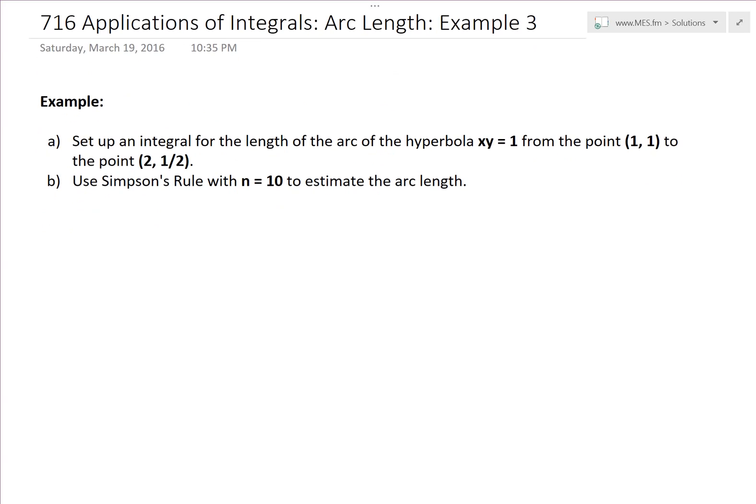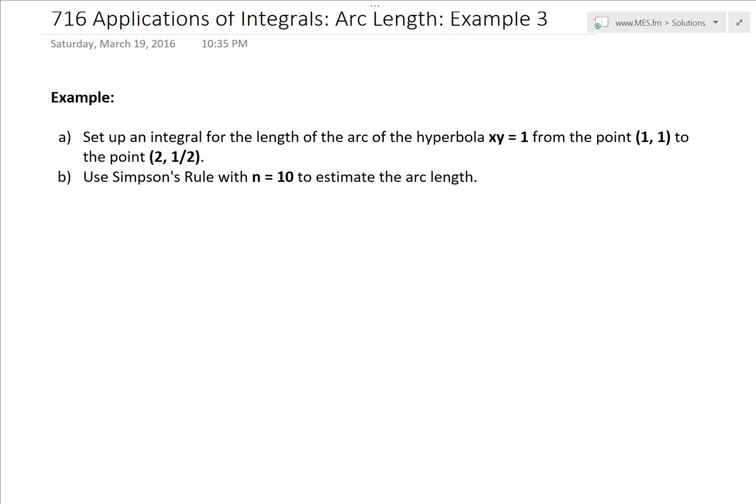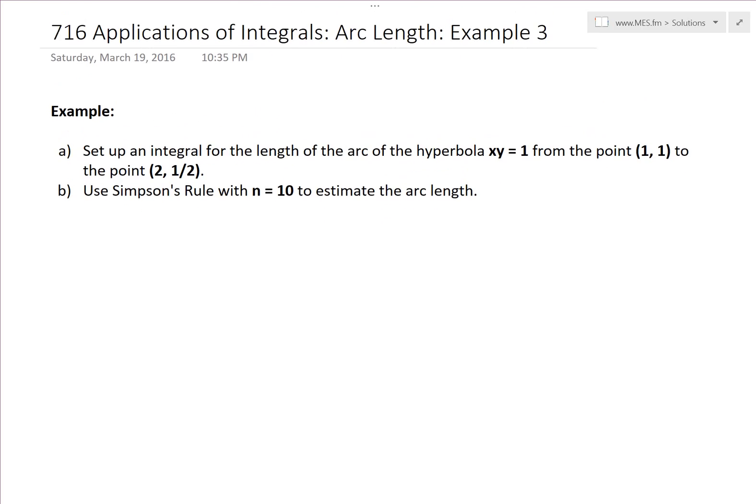Basically, I didn't cover this example, which said set up an integral for the length of the arc of the hyperbola xy equals 1 from the point (1,1) to the point (2, 1/2). And part B says use Simpson's rule with n equals 10 to estimate the arc length. And the reason we're going to use Simpson's rule is because the integral we're going to get is pretty complicated and may not even have an explicit integral, so it's better to do just an approximation.